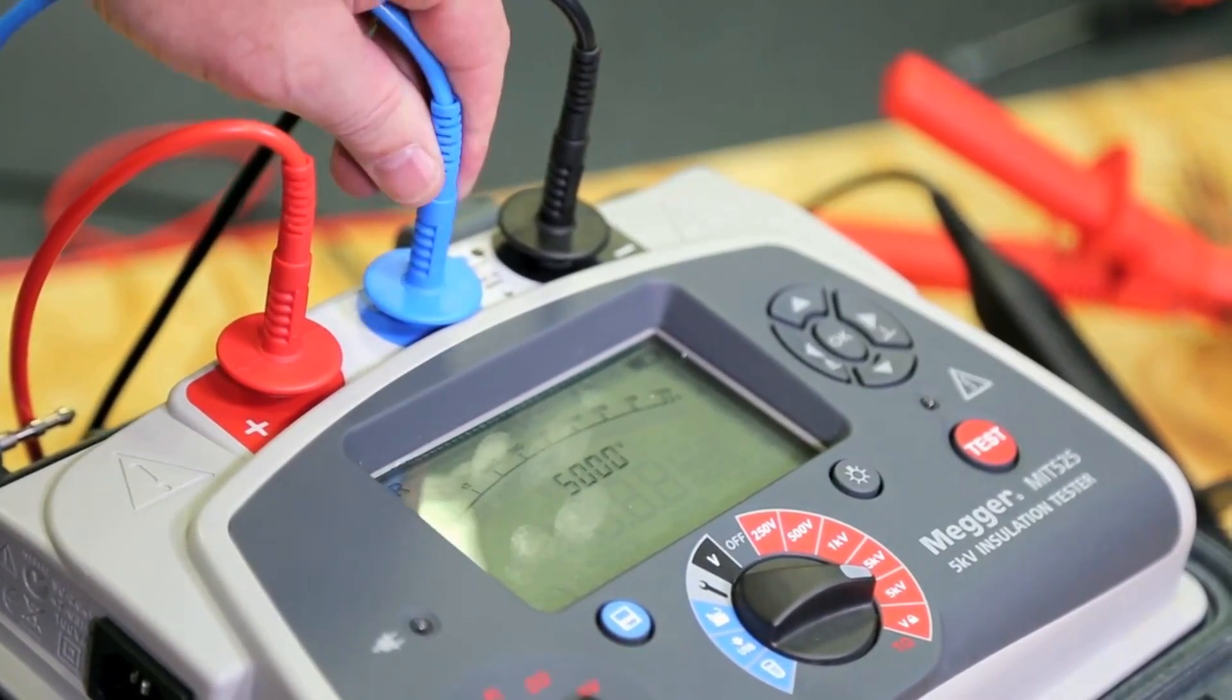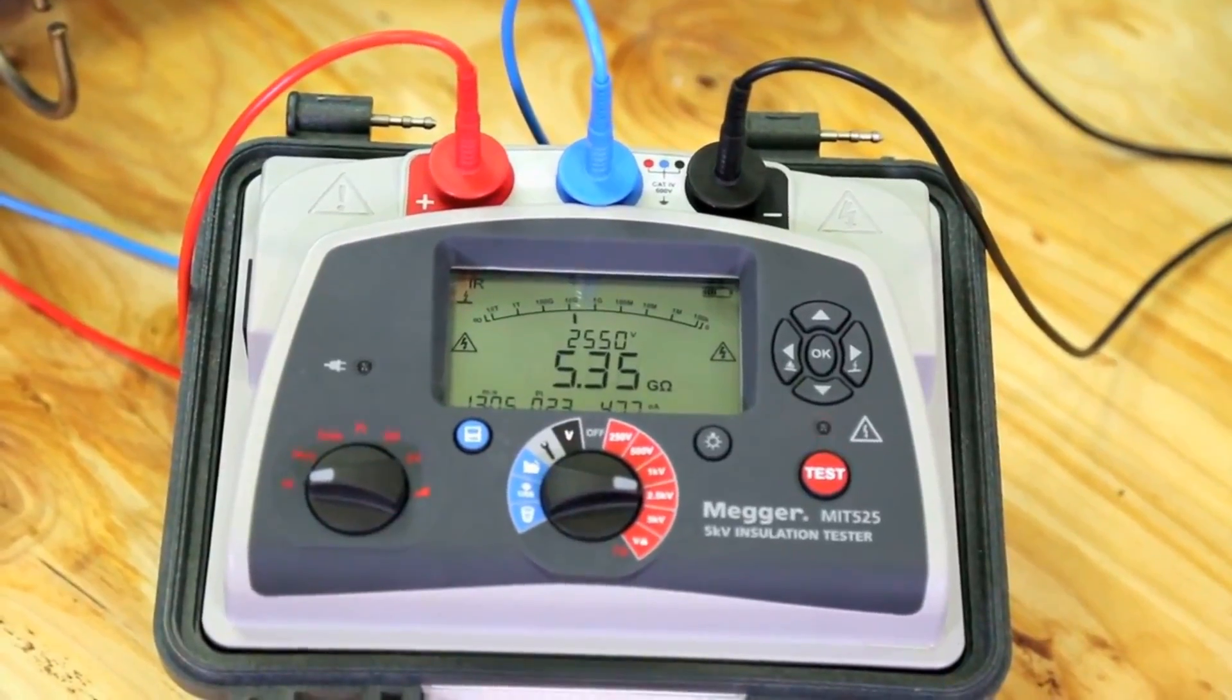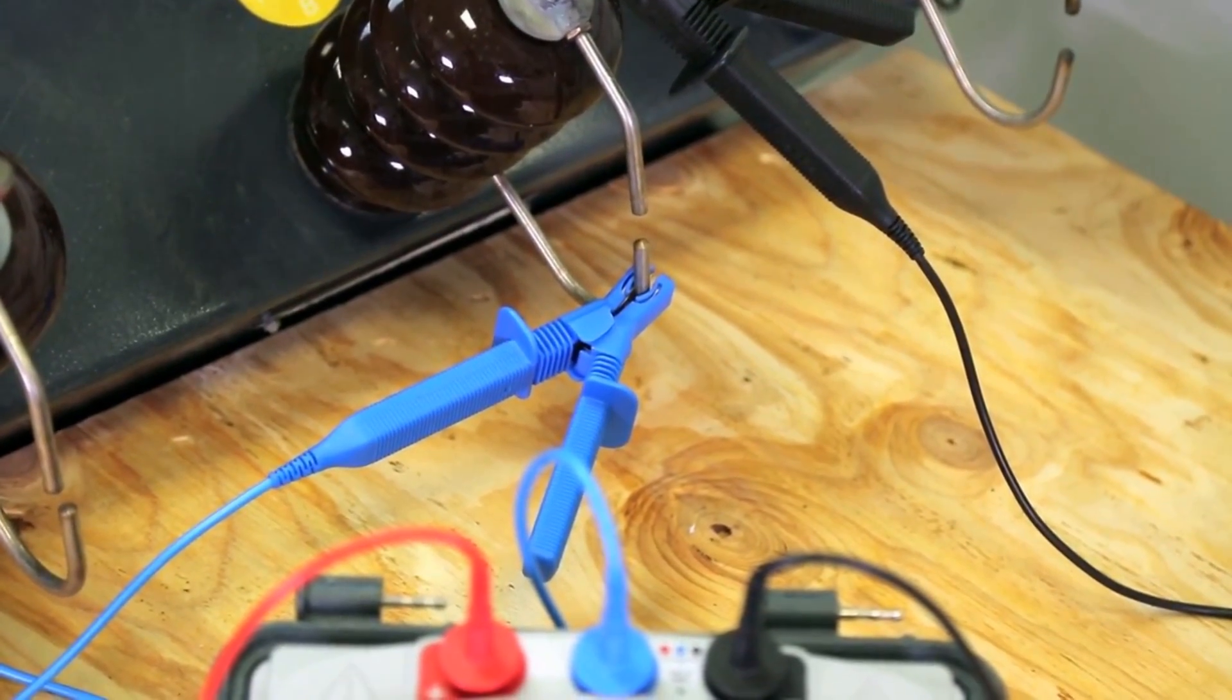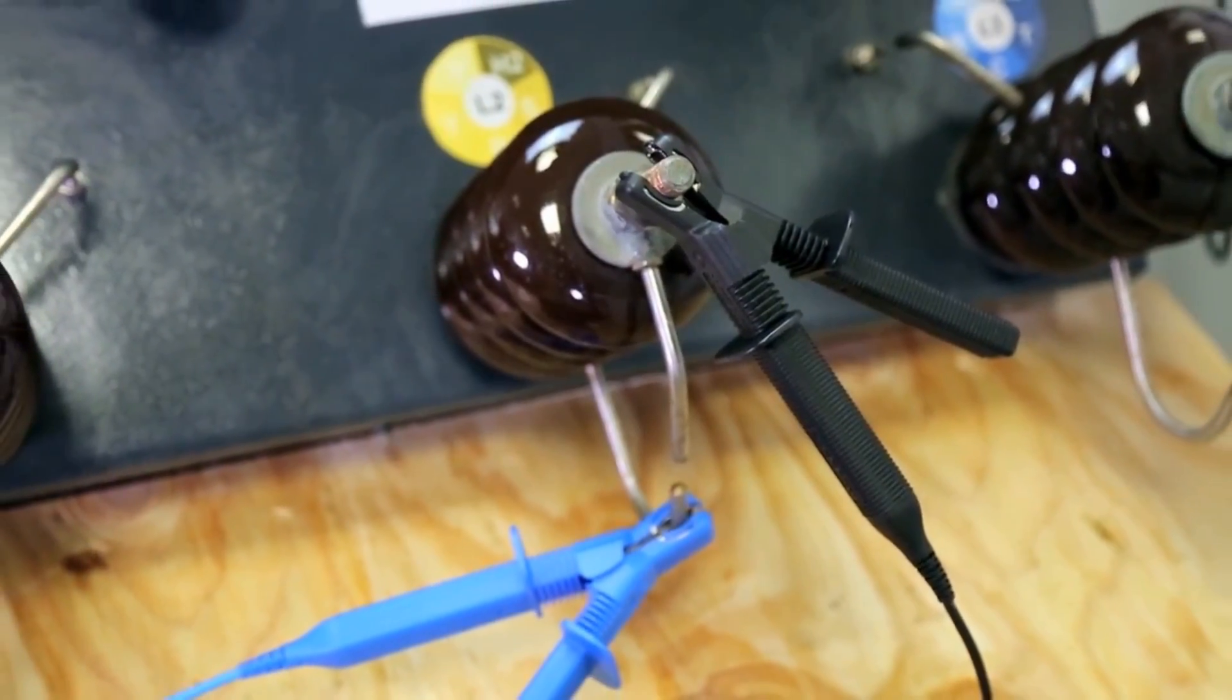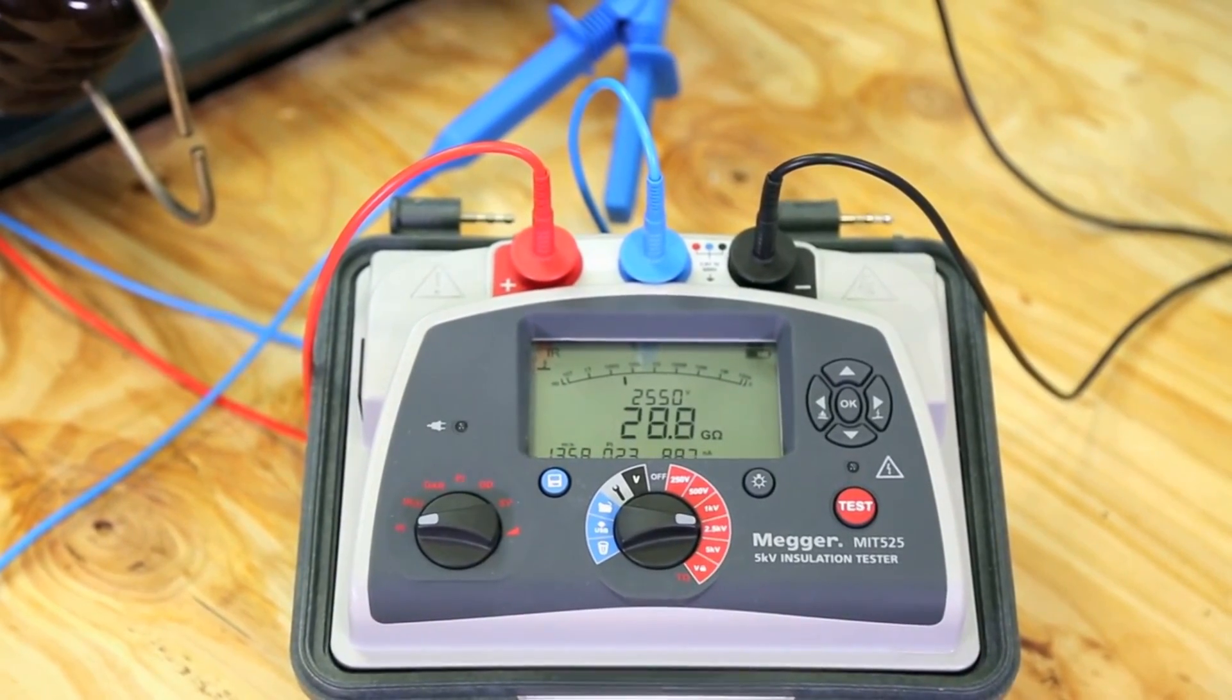The guard terminal ensures you measure the insulation that you want to measure. It measures and discounts any surface leakage current. It is key to the accuracy of the insulation tests. That's why MEGA's guard terminal performance is specified and offers unmatched accuracy.